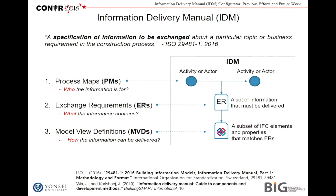Does everybody know what the information delivery manual is? According to the definition of ISO 29481-1, IDM is a specification of information to be exchanged. IDM consists of a process map, exchange requirements, and model view definitions. The process map defines who the information is for, exchange requirements define what the information contains, and the model view definition provides the answer of how the information can be delivered.